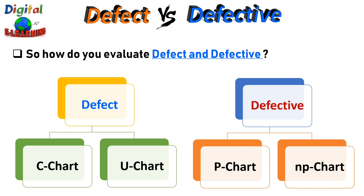Just to summarize: under defects, if you have a variable sample size, use the U chart; if you have a constant sample size, use the C chart — both using Poisson distribution. Under defectives using binomial distribution, for variable sample size use the P chart, and for constant sample size use the NP chart.